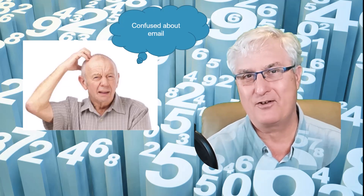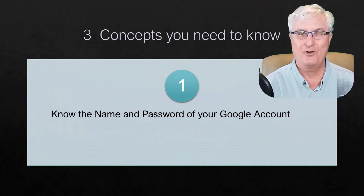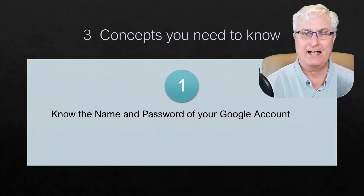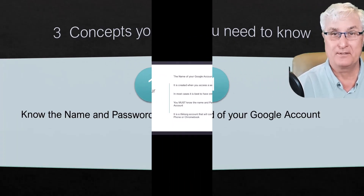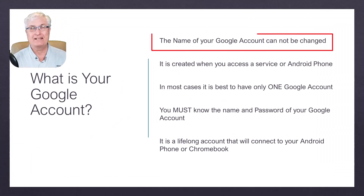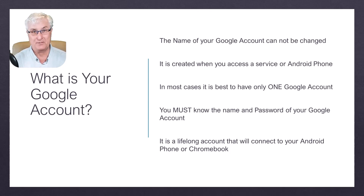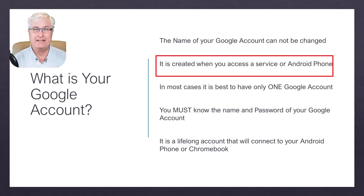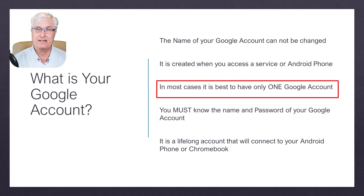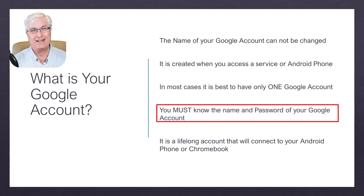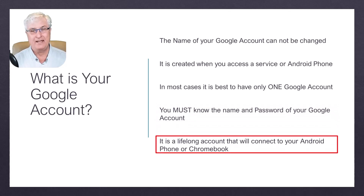Now let's get on with understanding these three concepts regarding email. The first thing you need to know is the name of your Google account and its password — this is so important. The name of your Google account is set up originally when you created the account and it cannot be changed. This is the name you will always use. You've probably forgotten about that because it's been a long time since you set it up. You must know the name and the password of your account.